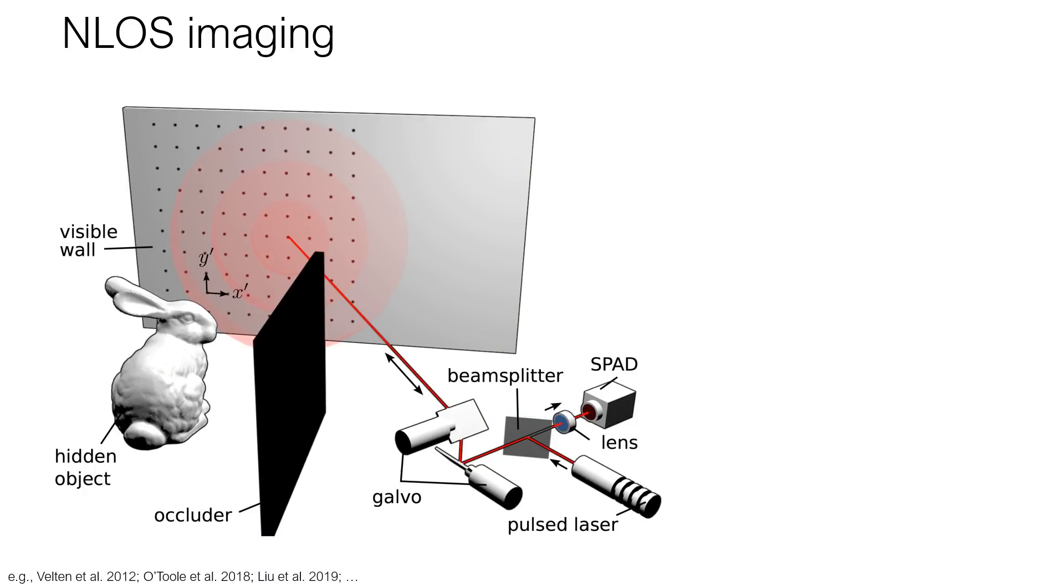NLOS imaging has established itself as an emerging research area with many recent publications. Most NLOS imaging methods use time-resolved systems to measure light which passes between a hidden object and a large visible surface like a wall. These transient signals are sampled at many locations on the wall, and then processed to estimate the 3D shape of the hidden object.